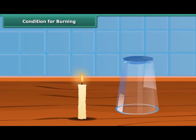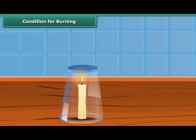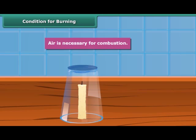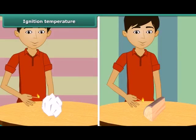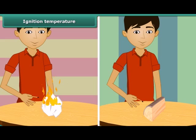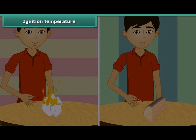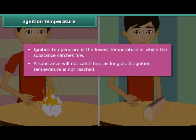Let us discuss the conditions necessary for burning. Light a candle and cover it with a glass tumbler. You will see that the candle stops burning after a while. This implies that a candle burns freely in the presence of air, therefore air is necessary for combustion. A piece of wood does not catch fire from a single matchstick, because it has not reached its ignition temperature. Ignition temperature is the lowest temperature at which a substance catches fire.